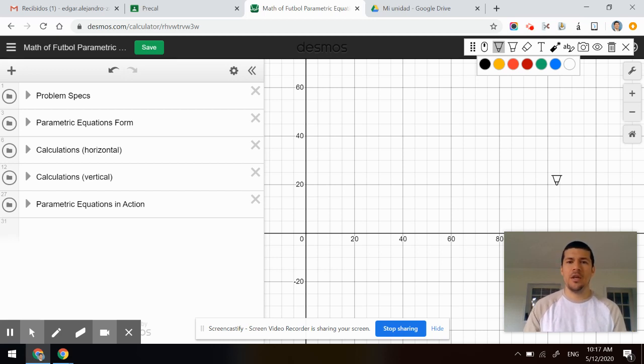A parametric equation is going to have a set of equations. You got an X equals because we discussed there is a horizontal component and there is a vertical component. So your X equals, you're going to have some equation depending on the variable T. For example, if it's a linear horizontal equation, you might have something like M.